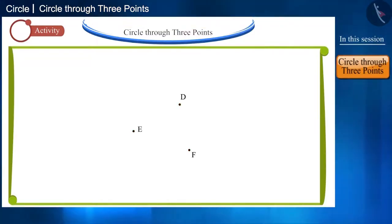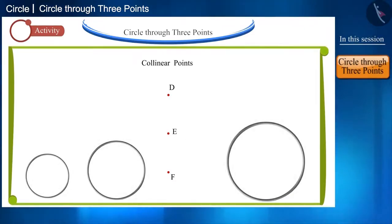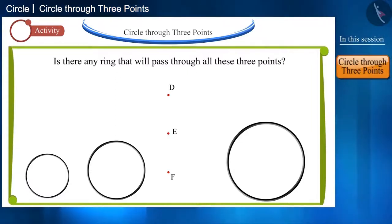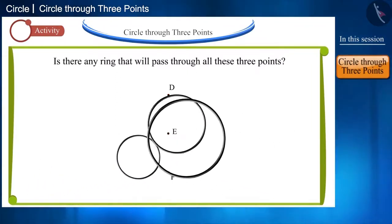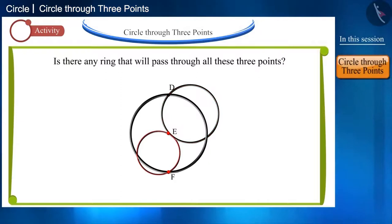If all three points are in the same line, then in this case these points are called collinear points. D, E and F are collinear points. Let us see in how many ways we can place the rings on these three points. Is there a ring that will pass through all these three points? No, there is no ring that will pass through all these three collinear points.